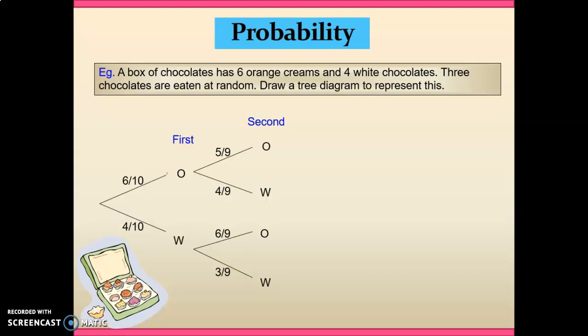So on to our third selection of chocolates. Imagining again, and starting from the top here, if we've eaten an orange, followed by another orange chocolate, our third chocolate may still come up to be an orange cream or a white chocolate. But we're getting progressively less orange creams. We've now presumably eaten two of those. We've now eaten two of our original 10 chocolates. There's only eight left.